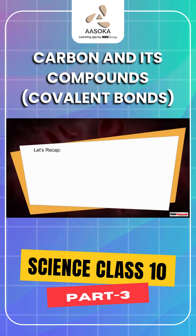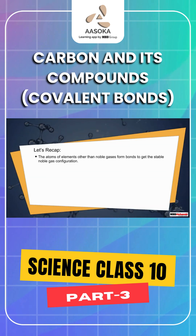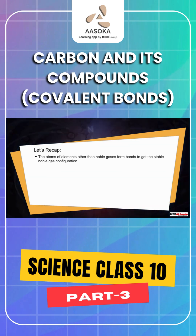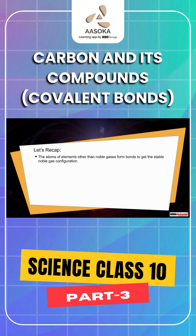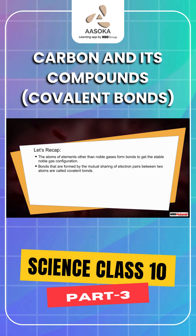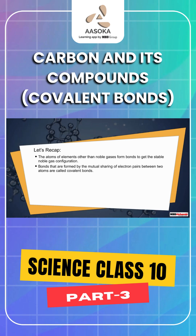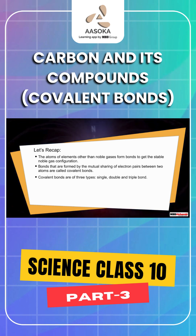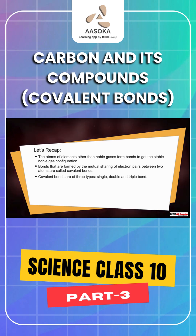Let's recap. The atoms of elements other than noble gases form bonds to get the stable noble gas configuration. Bonds that are formed by the mutual sharing of electron pairs between 2 atoms are called covalent bonds. Covalent bonds are of 3 types: single, double, and triple bond.